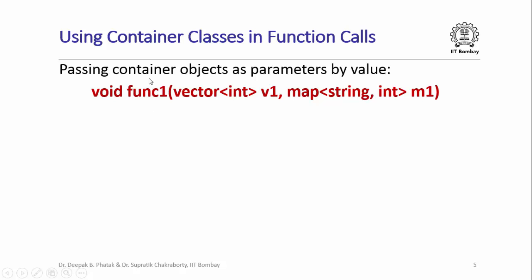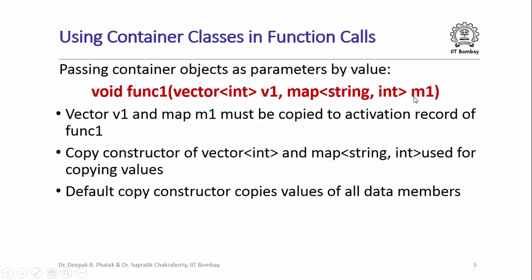What if I wanted to pass container objects as parameters to a function, and specifically pass these parameters by value? Here is an example of a function that takes two parameters, v1 and m1. v1 is a container object — it's a vector of integers. m1 is also a container object — it's a map with key type string and value type int. Since these two parameters are being passed by value, the vector v1 and the map m1 are going to be copied to the activation record of func1 when func1 is invoked.